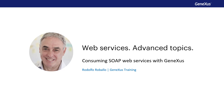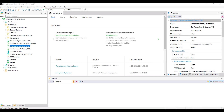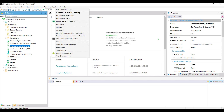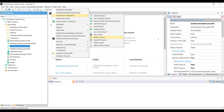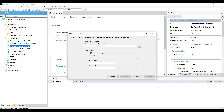Let's see how we can test a SOAP service published with GeneXus from GeneXus itself, importing it as an external object. Then we'll focus on some more advanced concepts that make it more flexible to consume these types of services. To import the SOAP service we published, we go to Tools, Application Integration, WSDL Import, and write the same WSDL we tested before.